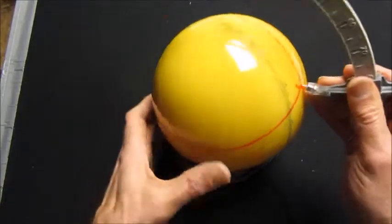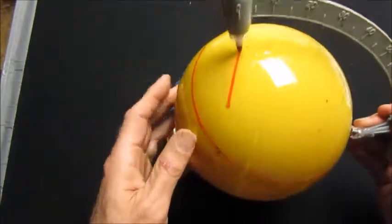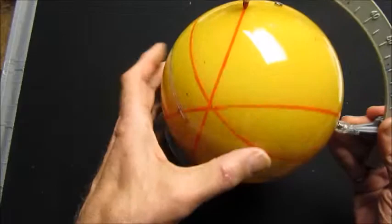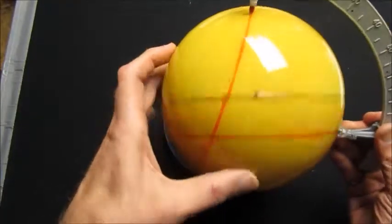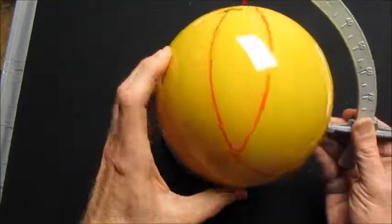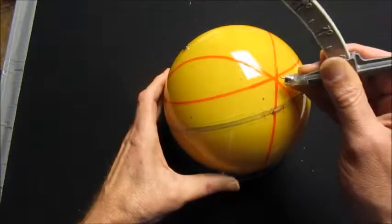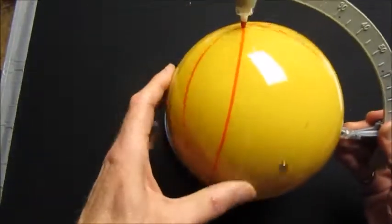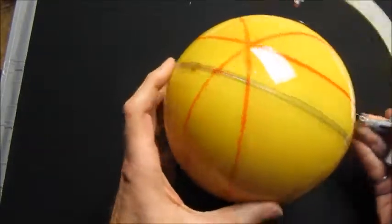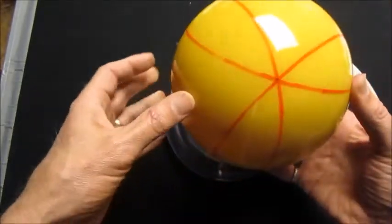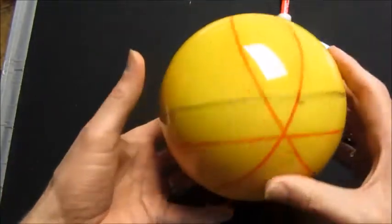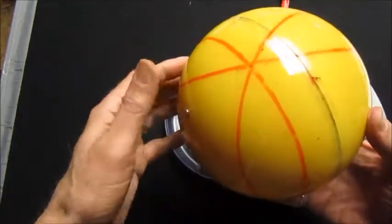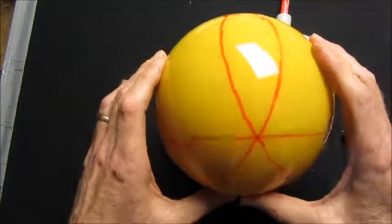That's the second, let's start the third. This is the fourth. So what we have here now are four circles intersecting at the four vertices of a tetrahedron.